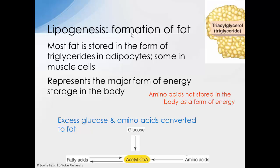Lipogenesis is the opposite in that it's the formation of fat. Most fat is stored in the form of triglycerides in adipocytes — the fat cells in the body — however some triglycerides are also stored in muscle cells. Fat represents the major form of energy storage in the body. Remember there are three fuels that can provide energy: glucose, fatty acids, and amino acids. We store glucose as glycogen in the liver and muscle, we store fat as triglycerides in adipose tissue, but strictly speaking we don't store amino acids as a fuel source — they can be accessed from skeletal muscle but are not stored like fat and glucose.